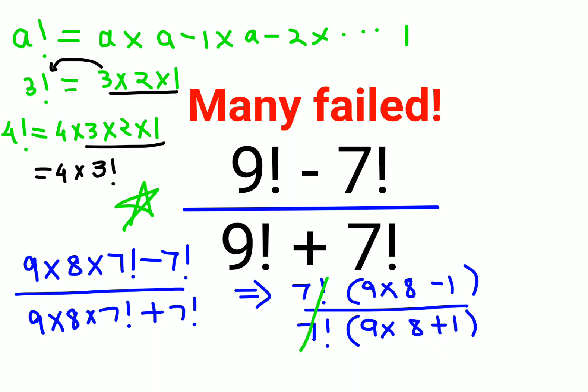Now what happens is this gets cancelled. So what you are left with is basically 72 minus 1 upon 72 plus 1. So the answer comes out to be 71 upon 73.